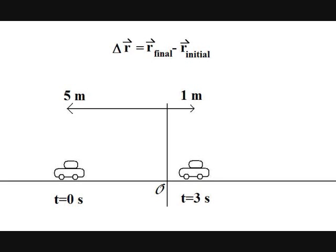The final position is one meter to the right, that makes positive one meter. The initial position is five meters to the left, that makes negative five meters. Notice that the sign convention is used to encode the direction.